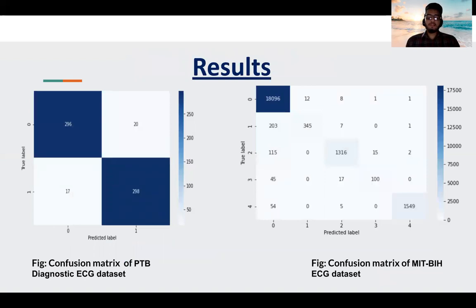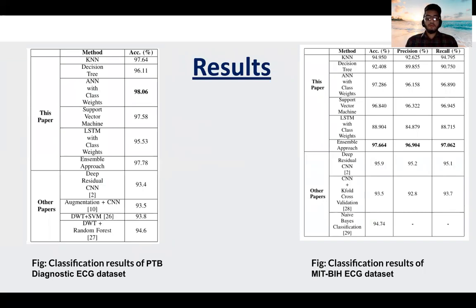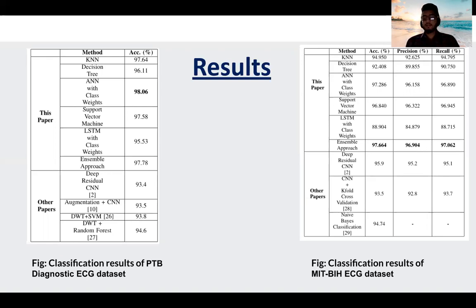These are the confusion matrices of our research. On the left side we have the confusion matrix of the PTB Diagnostic Dataset, and on the right side the MIT-BIH Arrhythmia Dataset. Our research was also compared with different state-of-the-art methods. For the PTB dataset, the best accuracy was achieved with ANN with class weights at 98.06%, and we also obtained high accuracy with KNN, Decision Tree, and SVM. For the MIT-BIH dataset, the best accuracy, precision, and recall were achieved with the ensemble approach, also compared with other state-of-the-art methods.